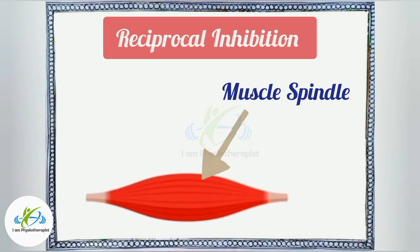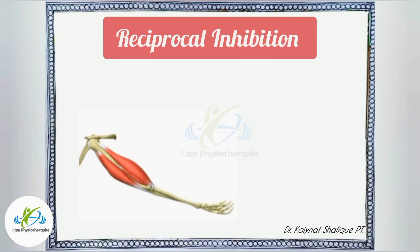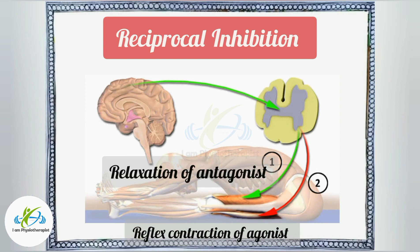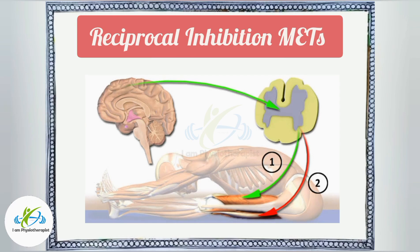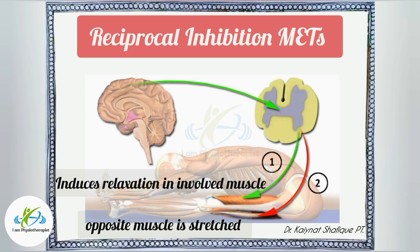The muscle spindle is located within the muscle belly and stretches along with the muscle itself. When the muscle stretches, the muscle spindle is activated. It causes a reflex contraction in the agonist muscle, known as the stretch reflex, and causes relaxation in the antagonist muscle. This process is known as reciprocal inhibition. That is why in reciprocal inhibition METs, after submaximal contraction of the involved muscle, the opposite muscle is stretched, so that it induces relaxation in the involved muscle.